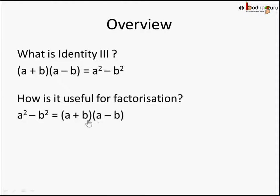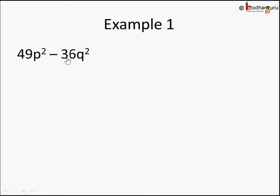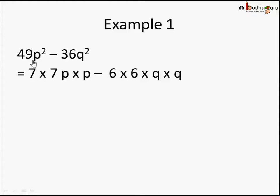Let's take an example. Suppose we are given the algebraic expression 49p² - 36q². It has two terms. Can we use Identity 3? It seems so, because 49 is 7², 36 is 6², so we write it as 7×7×p×p minus 6×6×q×q, which gives us 7²p² - 6²q².